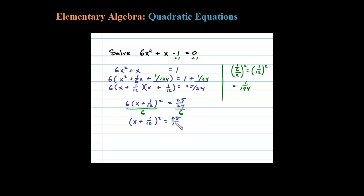25 over 144. So now we're ready to extract the root. Take the square root of both sides. Don't forget that when you do that you need the plus or minus. That leaves us with x + 1/12 equals plus or minus 5/12. This is a perfect square.